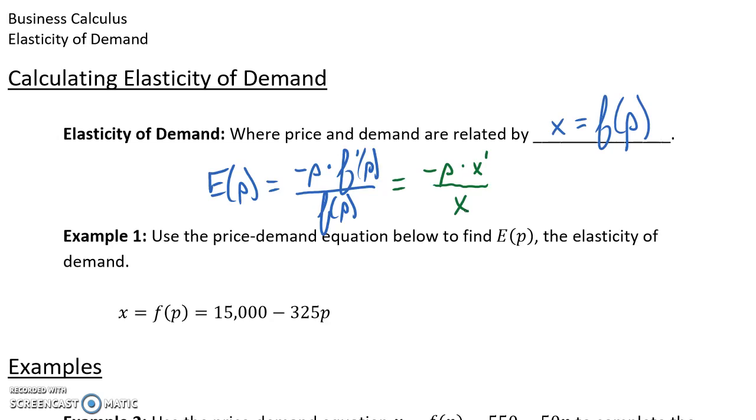So in example one, we're given a price-demand function. In this case, it's already in that form X equals some expression in terms of P. So what we'll do is turn to Wolfram Alpha to generate this elasticity function.